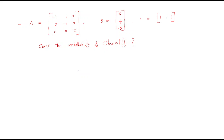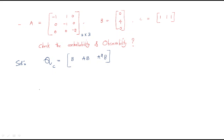Next we discuss another problem with the same question: check controllability and observability. This is a 3×3 matrix system, so we use the same procedure. The controllable matrix QC will consist of B, AB, and A²B.